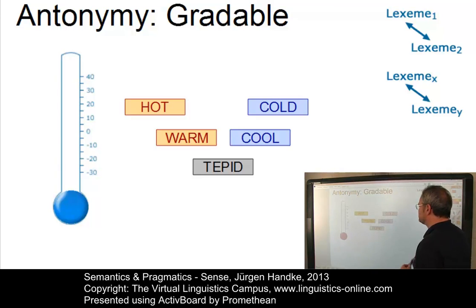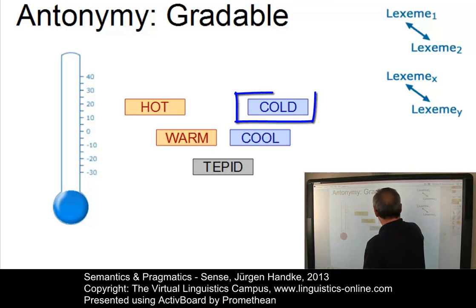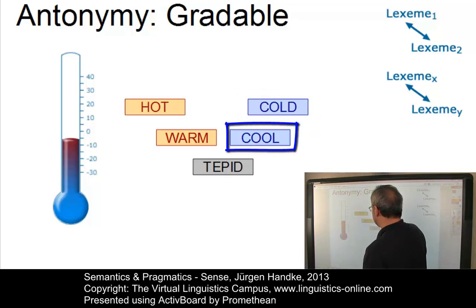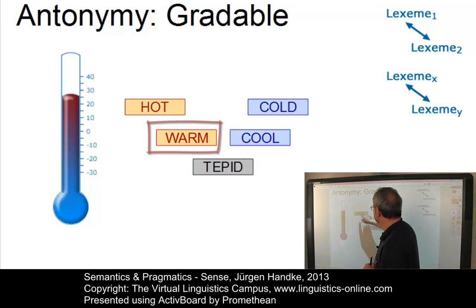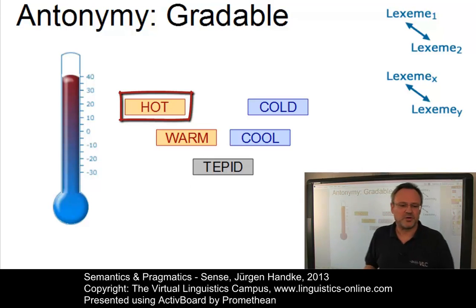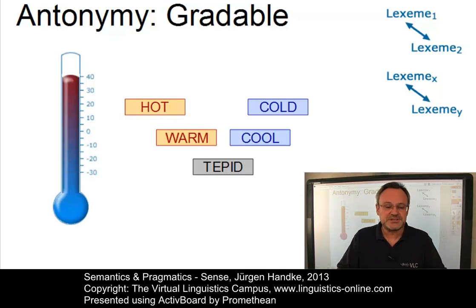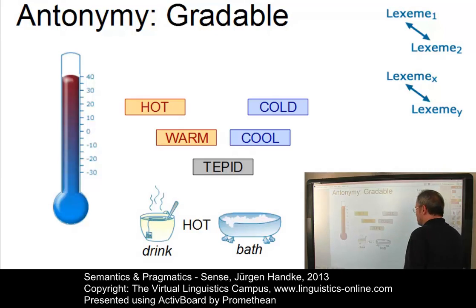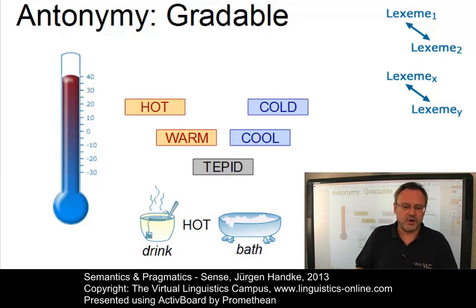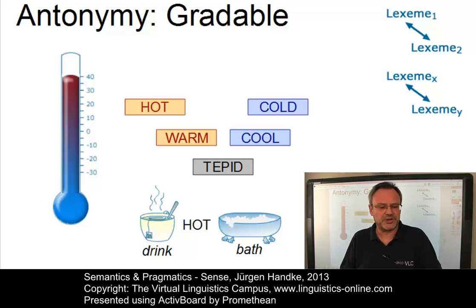Here is an example of such a scale. We have the antonyms hot and cold, but between them there are several possibilities: cold is a very low temperature, cool is a bit higher, tepid is somewhere in the middle, warm is even higher, and hot is the highest of these terms. The items are implicitly comparative terms and their definition varies according to the referent and the norm against which the referent is being assessed. For example, consider the term hot in a hot bath versus a hot drink — certainly both involve different degrees of hotness.